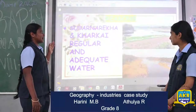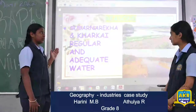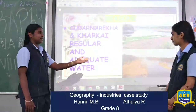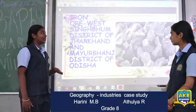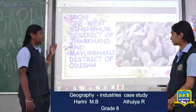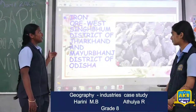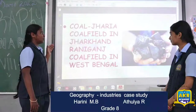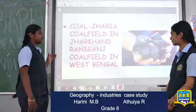Subarnarekha and Kharkai are the rivers which provide ample water for the plant. This is the Kharkai River and this is the Subarnarekha River. And we get the highest quality iron from the West Singhbhum district of Jharkhand and Mayurbhanj district of Odisha. And we also get the highest quality coal from the Jharia coal field in Jharkhand and Raniganj coal field in West Bengal.